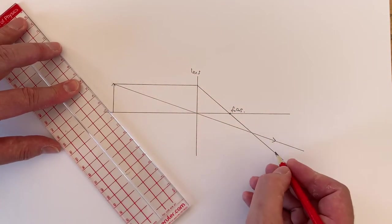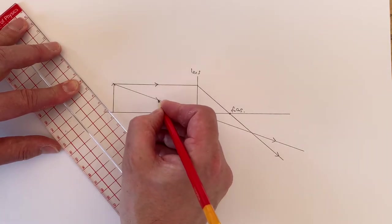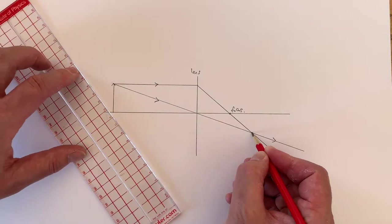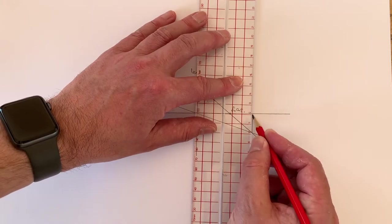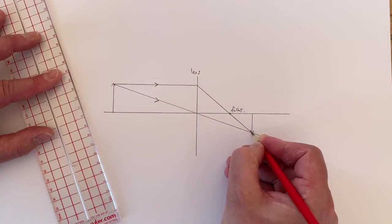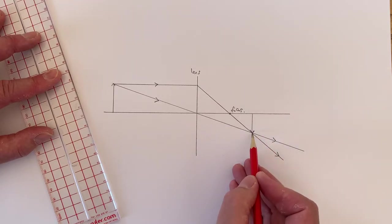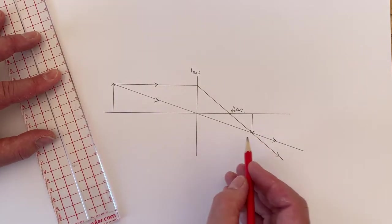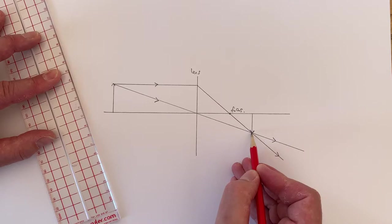Now, as you can see from this diagram, these two rays of light both cross at this point. And so, all of the light leaving the top of the object is going to be brought to a focus there, meaning we will see an image of the top of the object at that particular point.